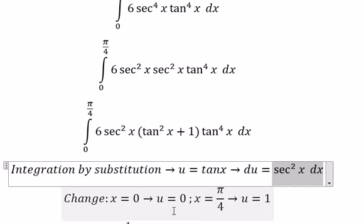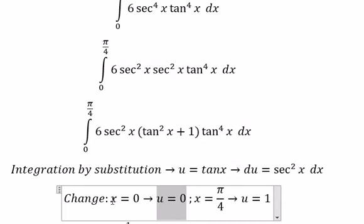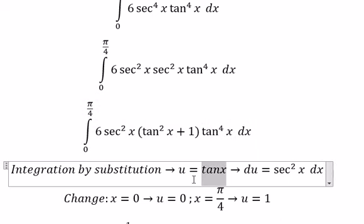Later we need to change the bounds. When x equals 0, we put in here, so we find the value of u. Similar for x equal to π/4.